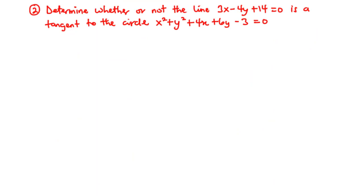Now for the conditions for a line to be a tangent to a circle: a line is said to be a tangent to a circle if the perpendicular distance from the line to the center of the circle is equal to the radius.